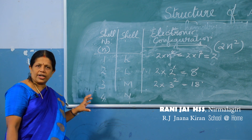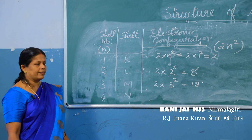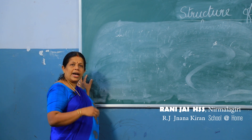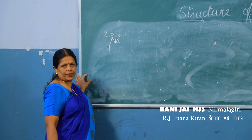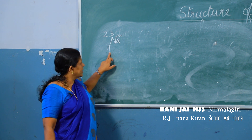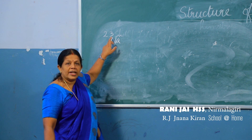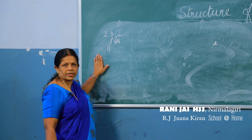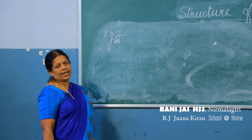After finding the electronic configuration, we draw the Bohr model. Let us see with an example how we represent the symbol of an element by writing the atomic number and mass number. For sodium, atomic number is 11 and mass number is 23. The atomic number is written as a subscript on the bottom left, and the mass number as a superscript on the top left of the element symbol.